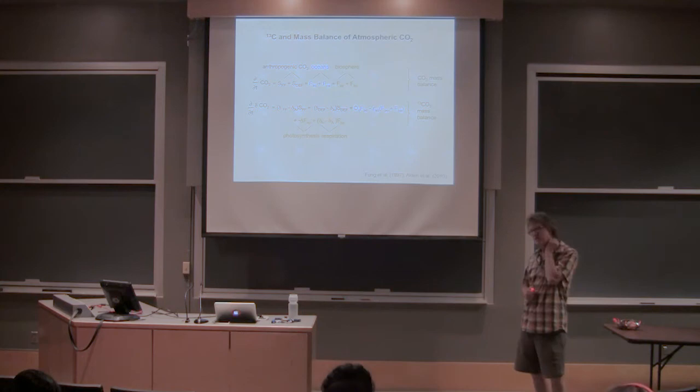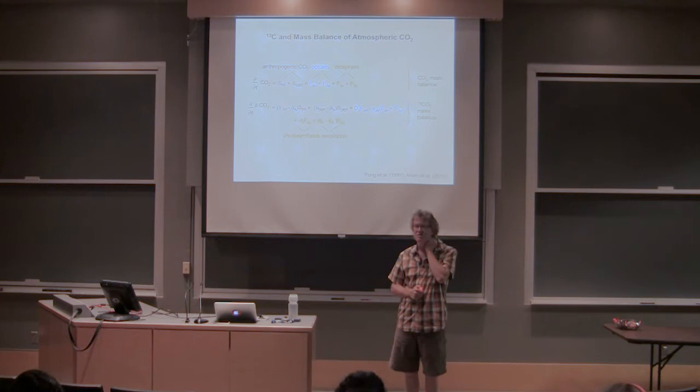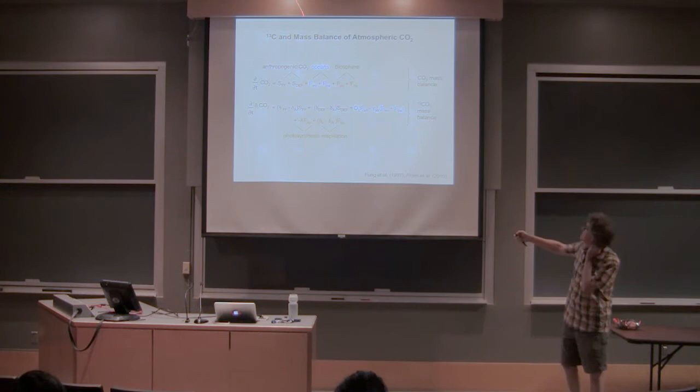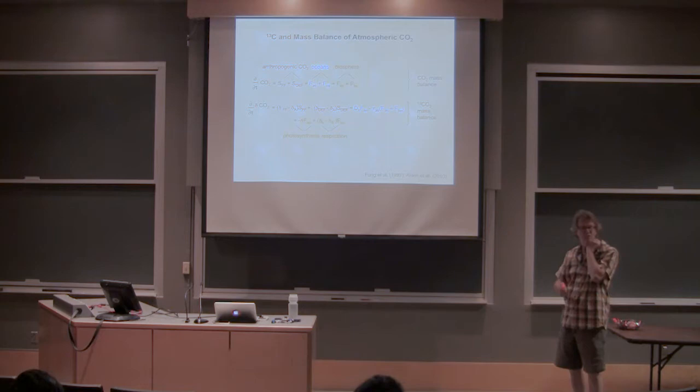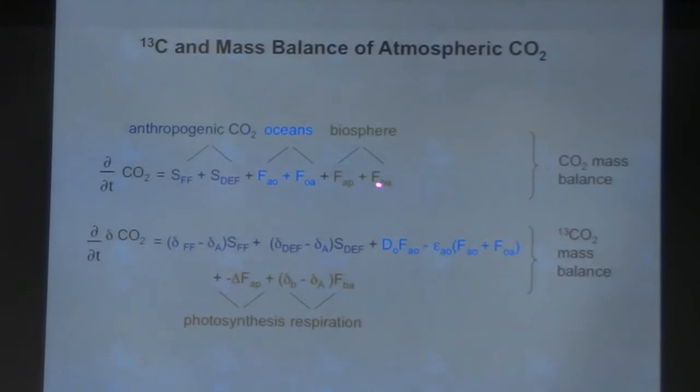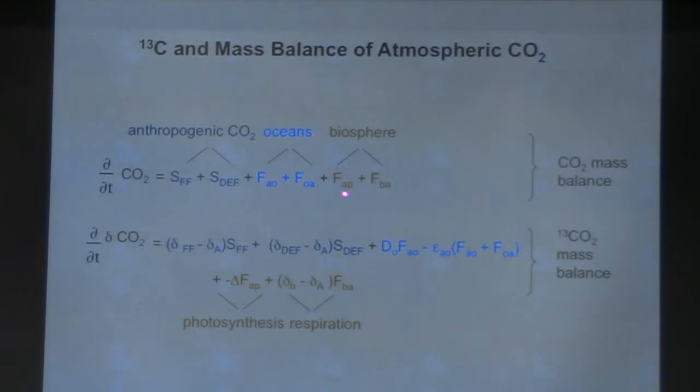The notation here comes from this paper by Inez Fong—I'm consistent with that because it was a seminal paper. SFF is the flux of fossil fuels—that's the 7.8 gigatons of carbon per year I showed you on the global carbon cycle diagram. DEF is deforestation. As we cut down tropical forests and burn them, they're made of carbon and carbon gets returned to the atmosphere. That is not a negligible flux—it's actually significant compared to the magnitude of these others.